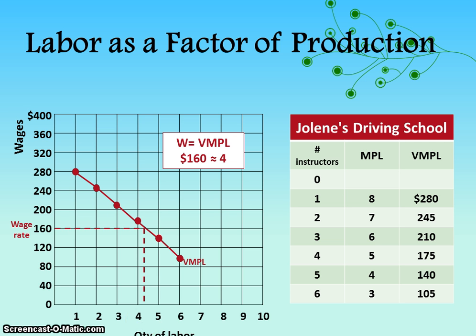That brings us to the end of the notes. We're taking the idea of studying inputs and the law of diminishing marginal returns one step further to figure out how many workers should be hired — by multiplying the marginal product of labor by the selling price of the product, then finding where that equals the wage rate of the input. That's your optimal number of inputs.